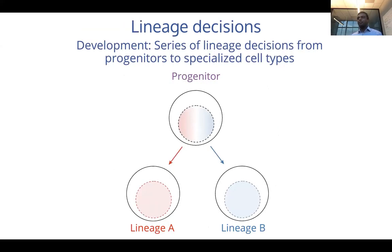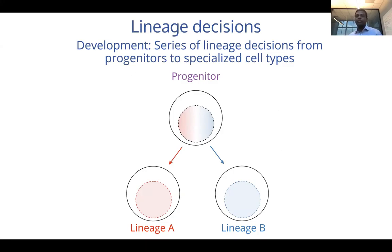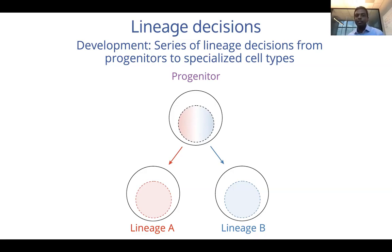One way to really abstract this entire process — either development or differentiation — is to view it as a series of lineage decisions where a progenitor cell type, meaning a cell type or state which can give rise to multiple different cell types, gives rise to different lineages. Even though this is a very simple abstraction, it becomes very powerful.